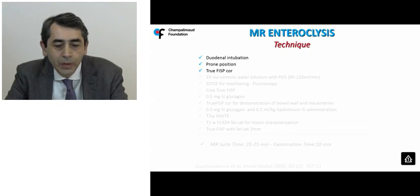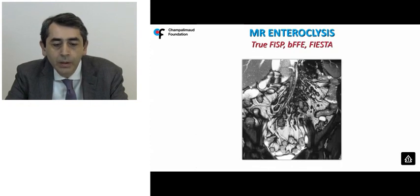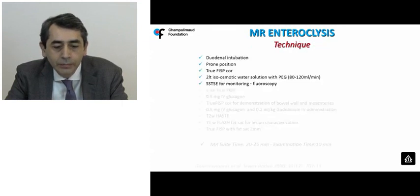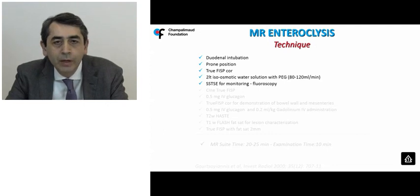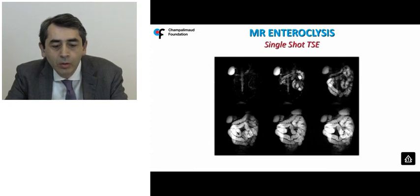In MR enteroclysis, the patient undergoes duodenal intubation and a naso-jejunal catheter is placed down to the ligament of Treitz. The patient is placed in prone position for compression effects, and a hybrid sequence like TruFISP, balanced FFE, or FIESTA is applied before any contrast administration to examine extra-intestinal manifestations of disease while keeping the bowel in a relaxed state. Then a maximum of two liters of isosmotic water solution — mostly polyethylene glycol — is slowly infused, and a dedicated single-shot turbo-spin-echo thick-slice sequence (similar to MRCP) is used to monitor the contrast infusion process.